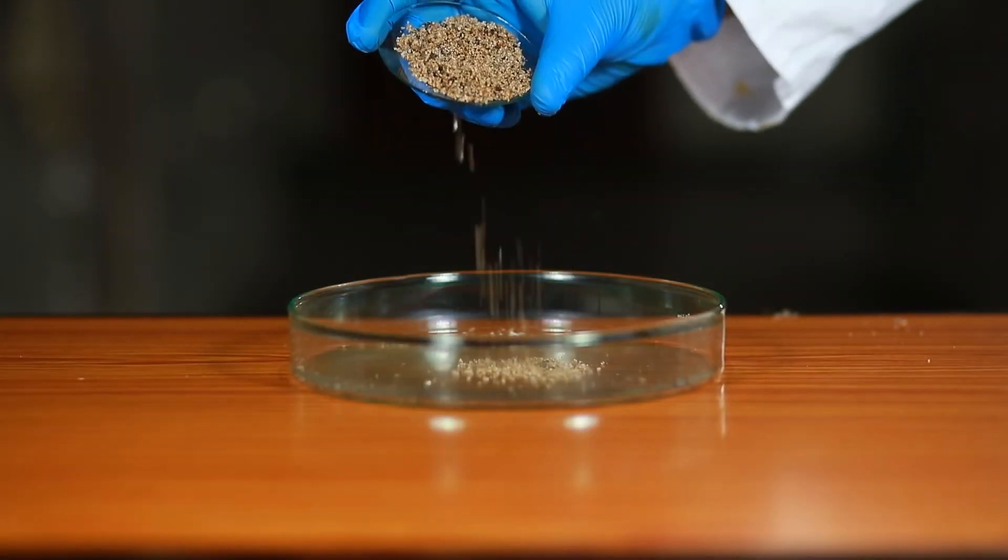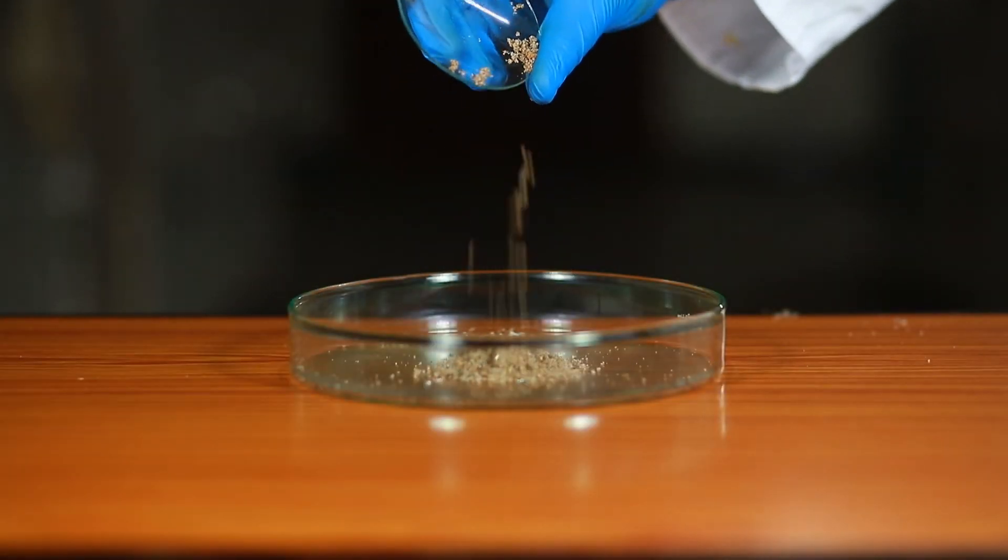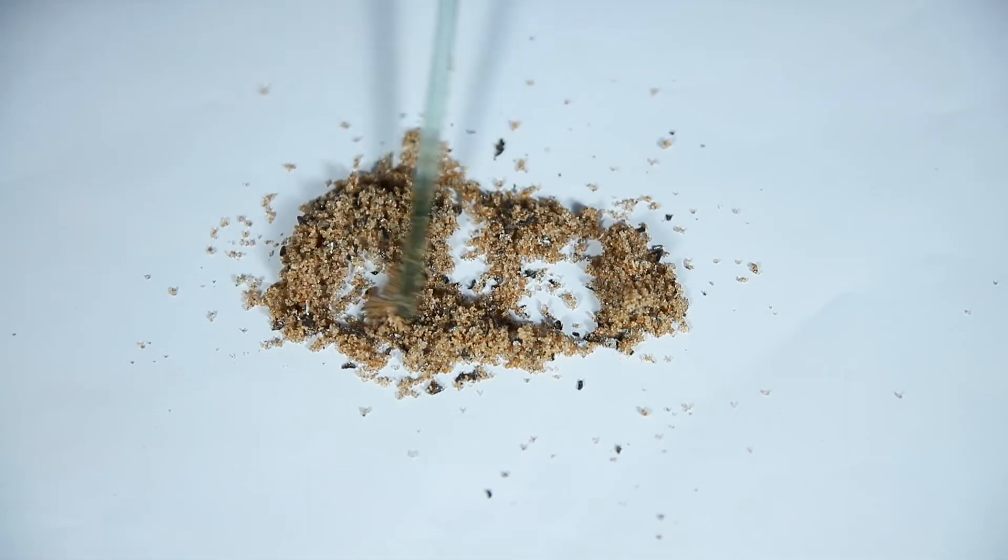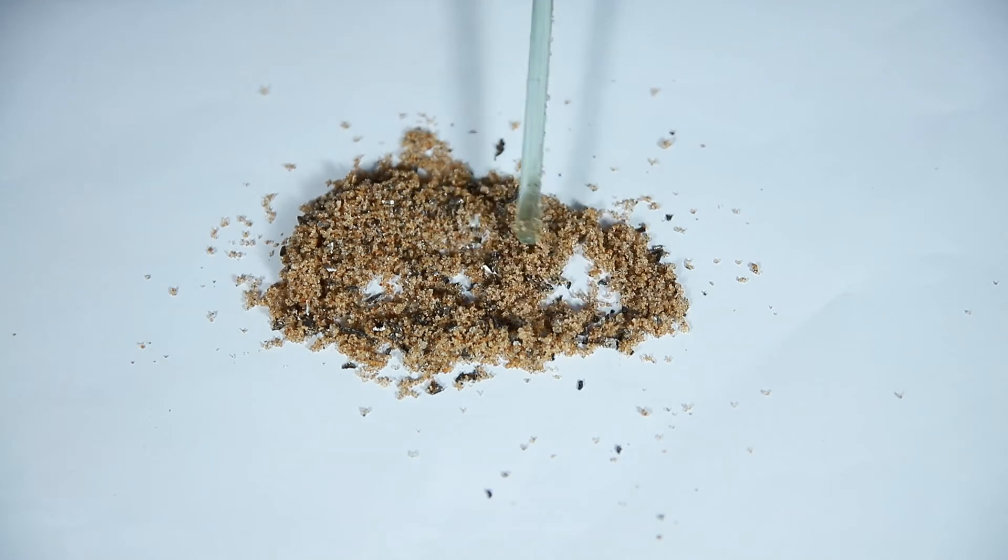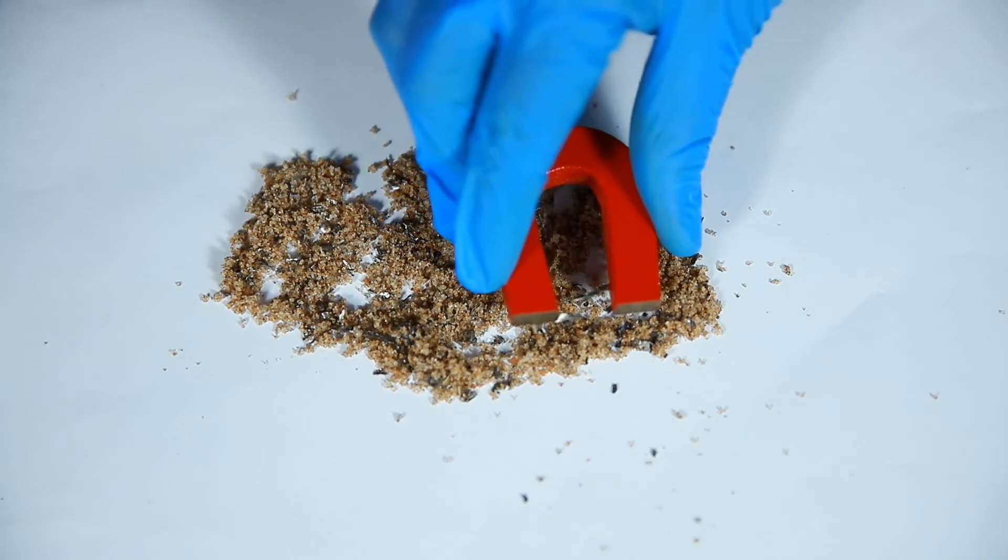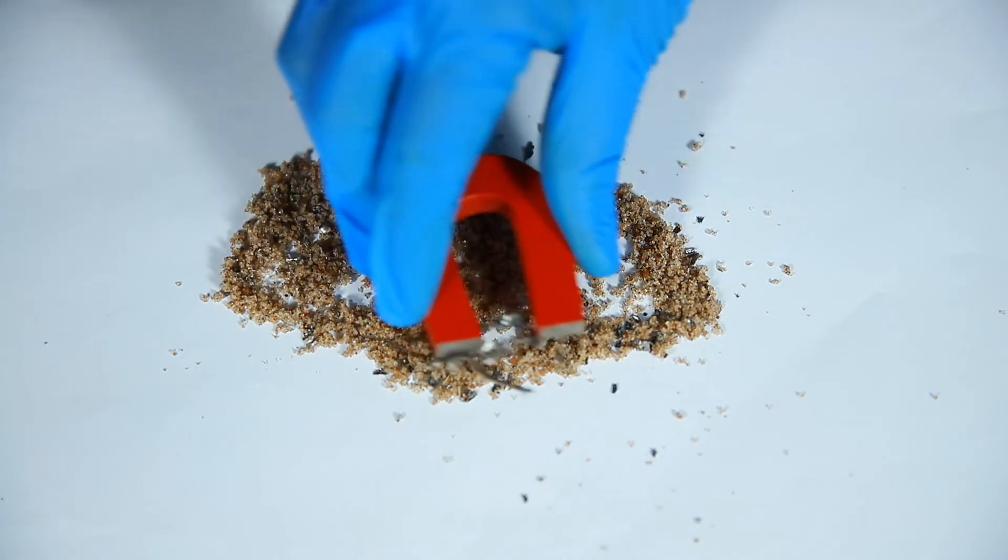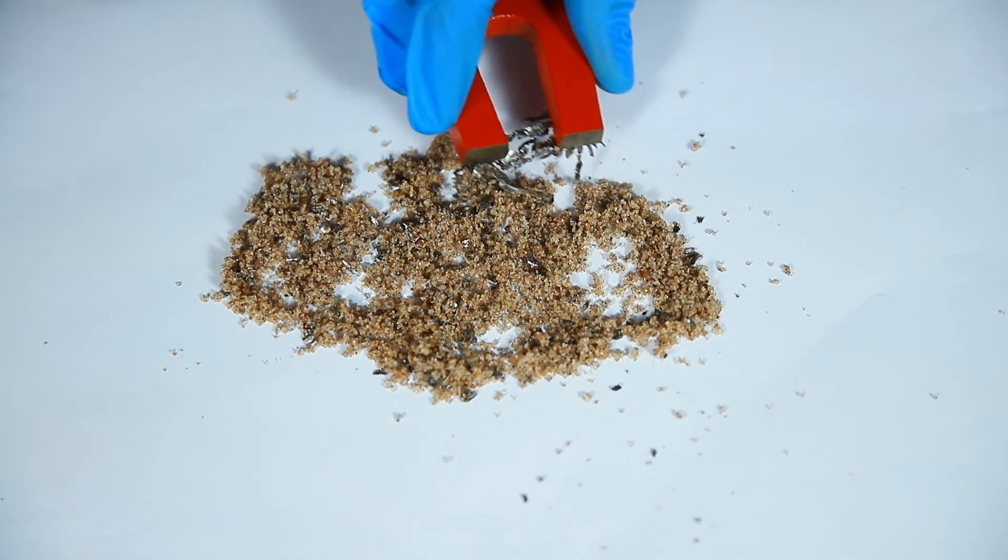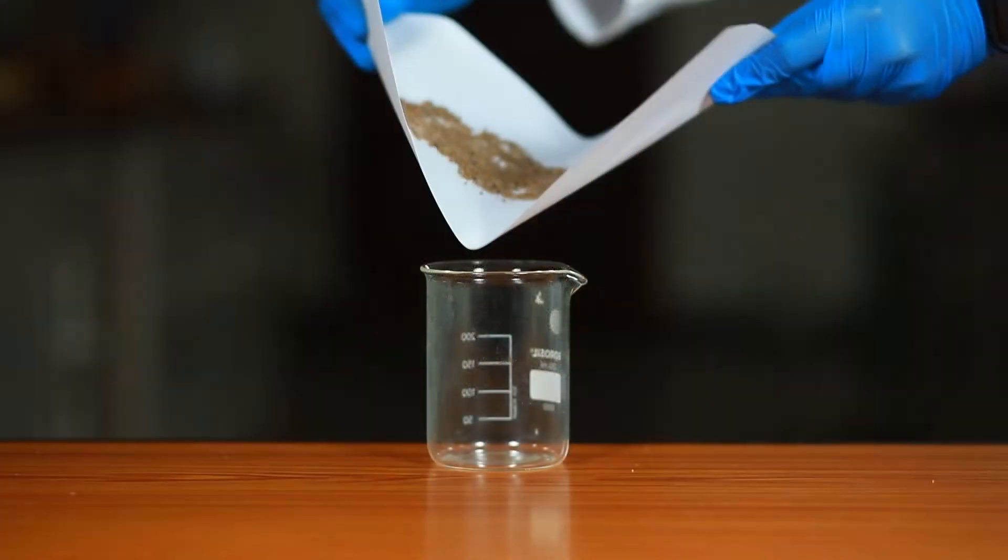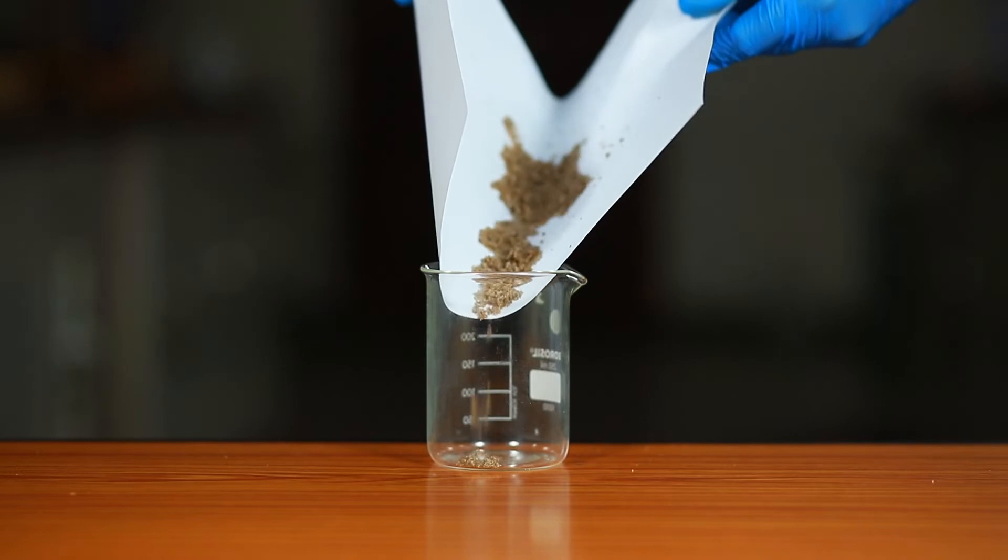Take a small amount of the given mixture of iron filings, sand, and common salt in a Petri dish. Using a glass rod, spread the mixture. Move a magnet over the surface of the mixture. We observe that iron filings stick to the magnet and are thus separated. Fill a beaker with the residual mixture after the iron filings have been removed.